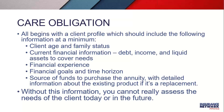This all begins with a client profile, and the model act states what it's expected that you include inside that client profile. You're expected to know your client's age, family status, their current financial information, their debt, their income, their liquid assets to cover needs both today and in the future, their financial experience — so are they savvy with mutual funds, stocks, bonds, or are they very conservative? You need to know their financial goals and their time horizons. You also need to know the source of funds to purchase the annuity, with detailed information about the existing product if it's a replacement. It's clear in the act that without all of this information, you cannot really assess the needs of your clients today or in the future.